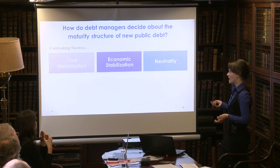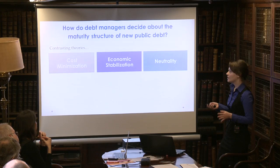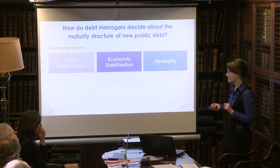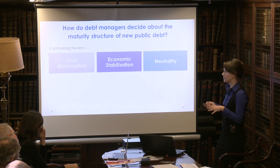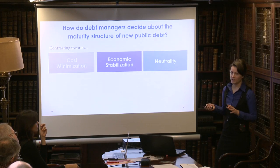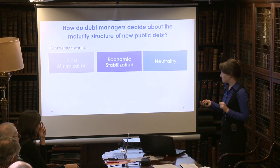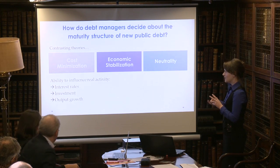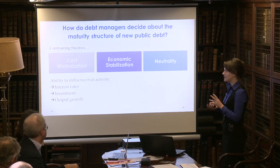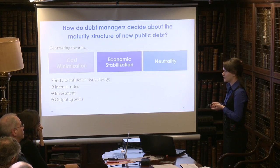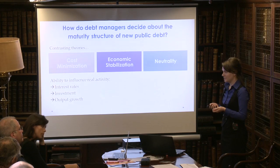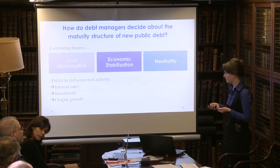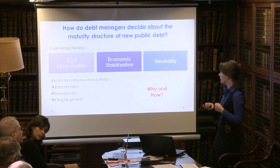Now, economic stabilization and neutrality are two sides of the same coin, and these are ideas that were developed after World War II in the 1960s and forgotten since then. Here the notion is that instead of just reacting to interest rates, the maturity structure can influence real activity — it can influence interest rates, investment, and output.